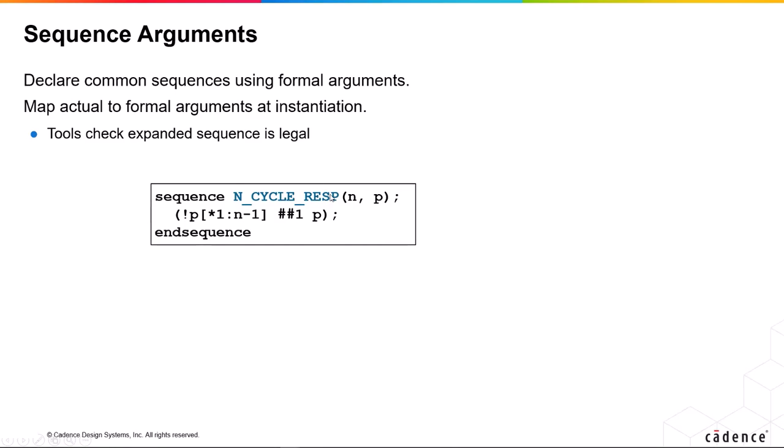So when you define a sequence or a property, you can define them with arguments and there's various ways of doing this. This is the simplest way that we're going to talk about here.